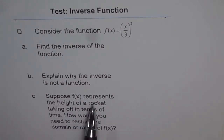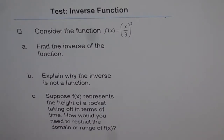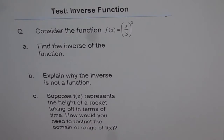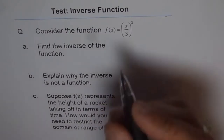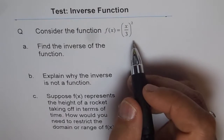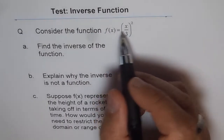Suppose f(x) represents the height of a rocket taking off in terms of time. How would you need to restrict the domain or range of the function? Try to answer it and then watch my video. Here is my solution. To find the inverse of any function, the first step is to swap x and y.